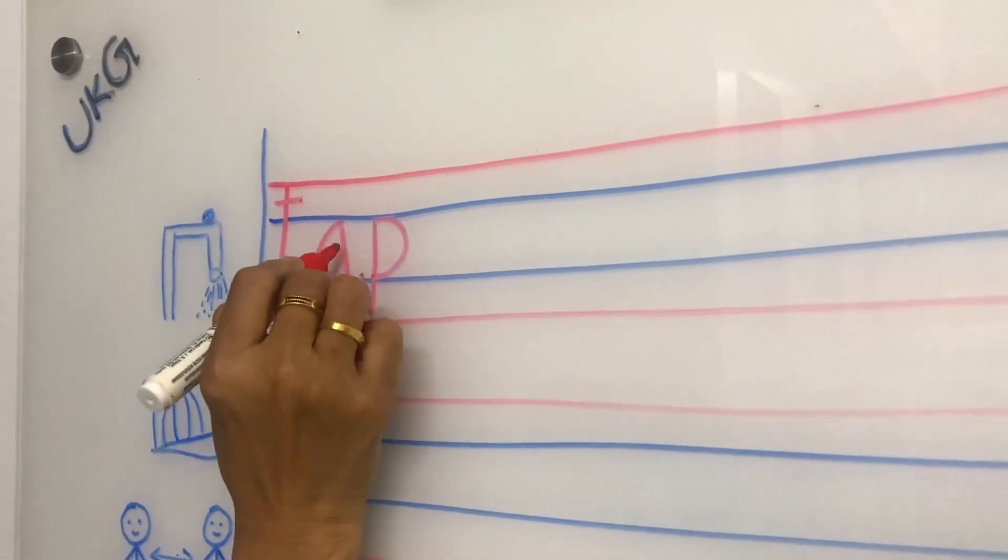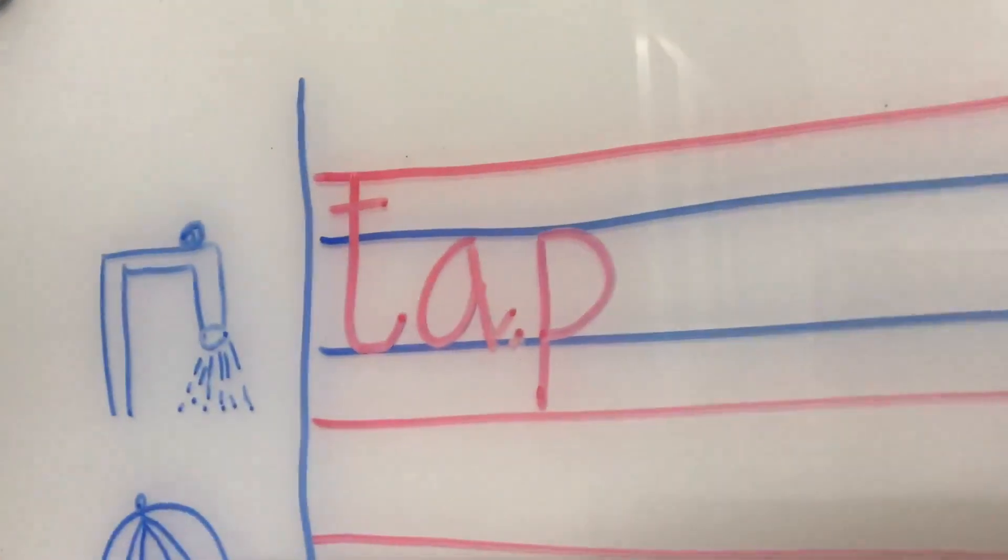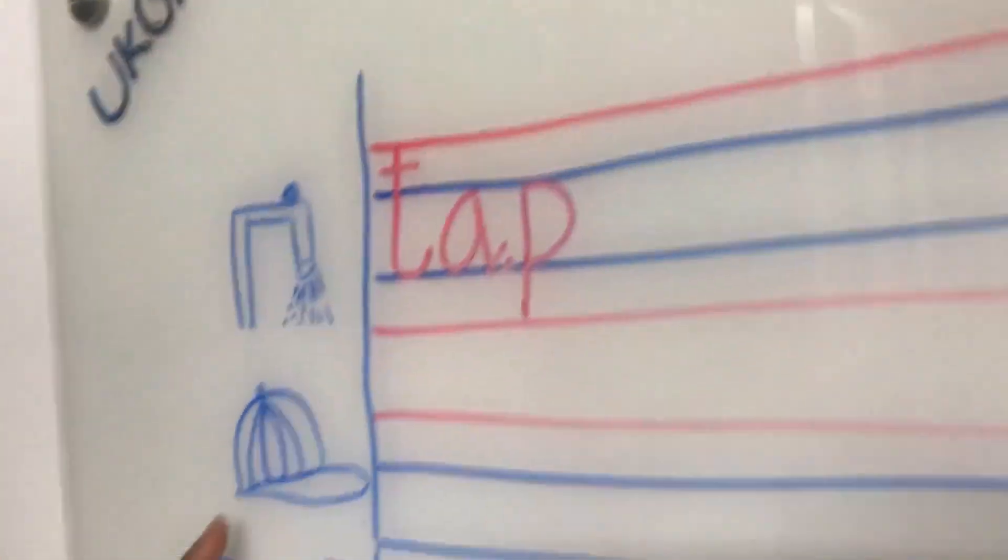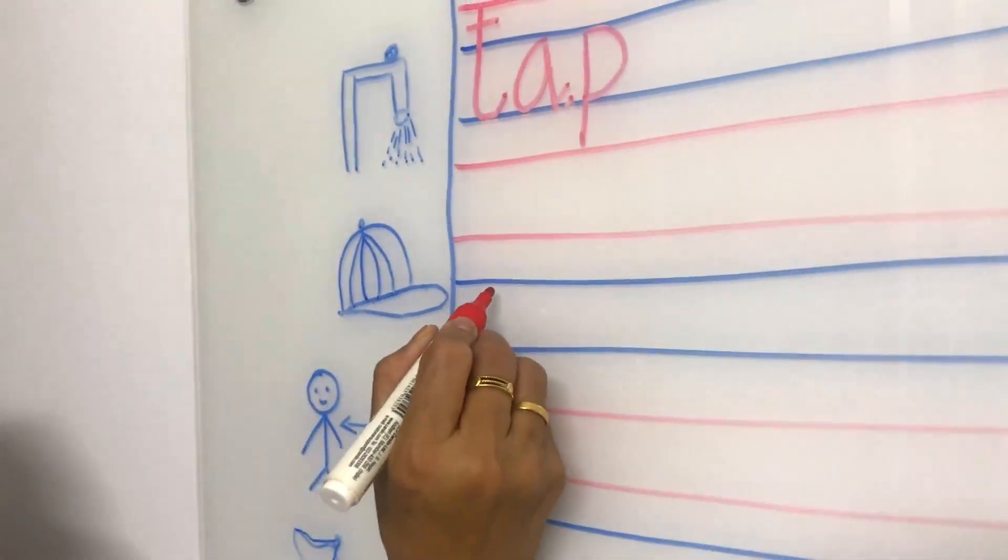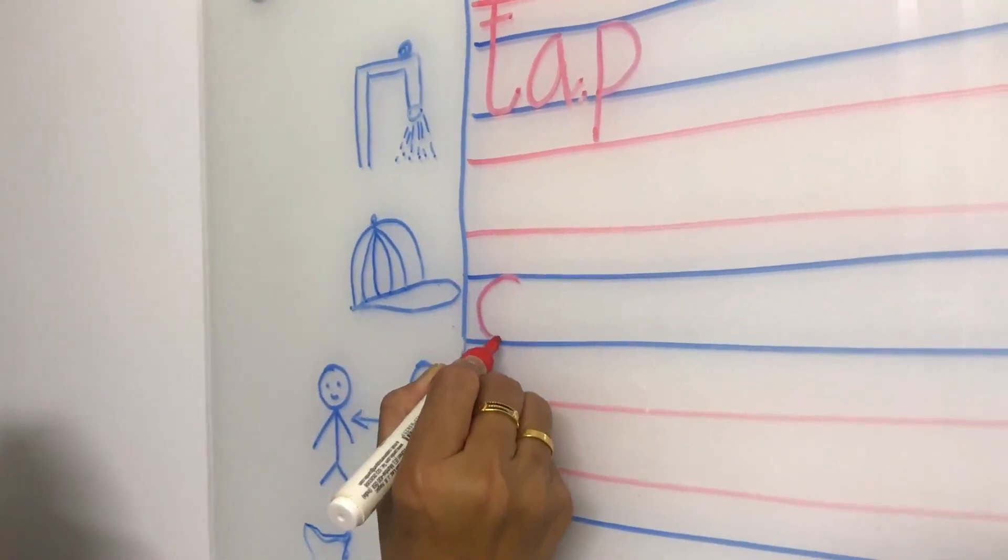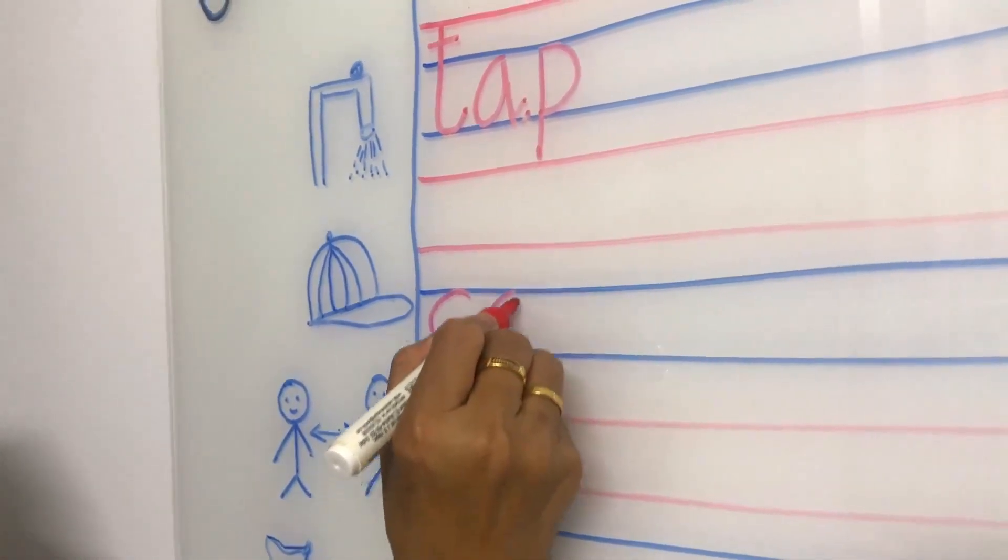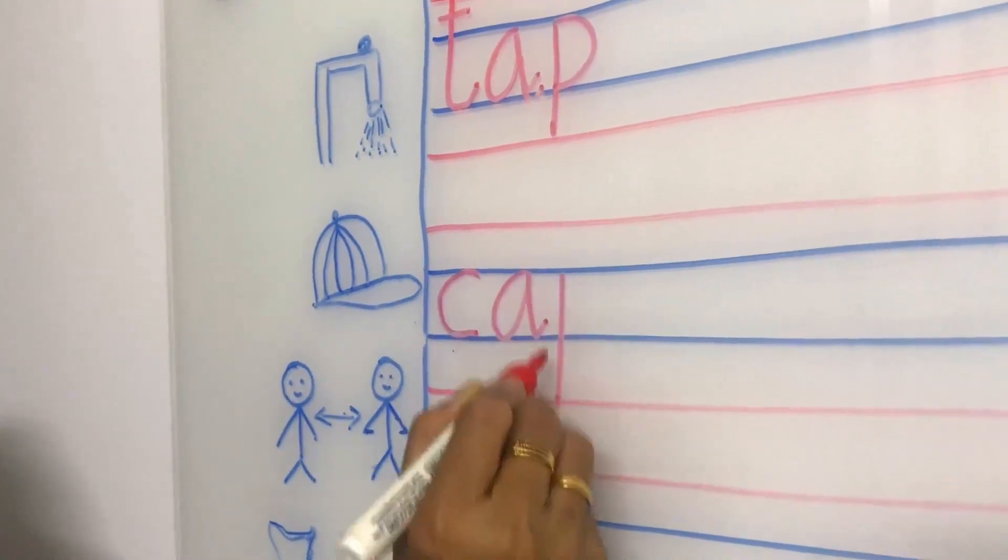What is this? T, A, P, tap. What is this next one? This is cap. What is the spelling of cap? See, C, A, P, cap.